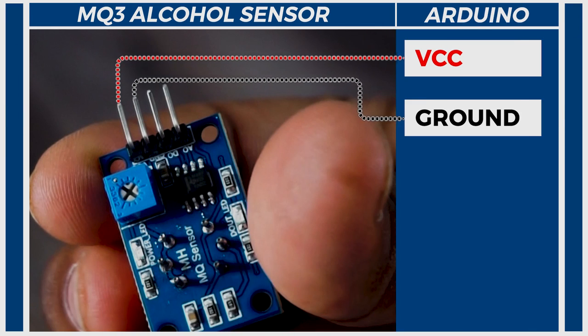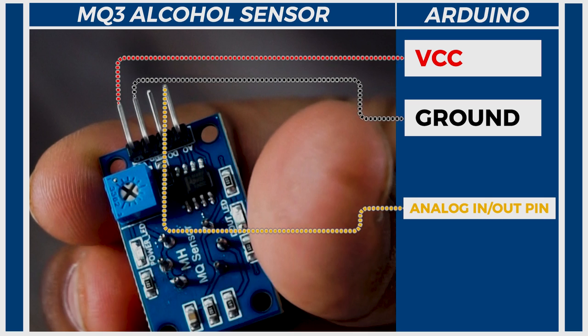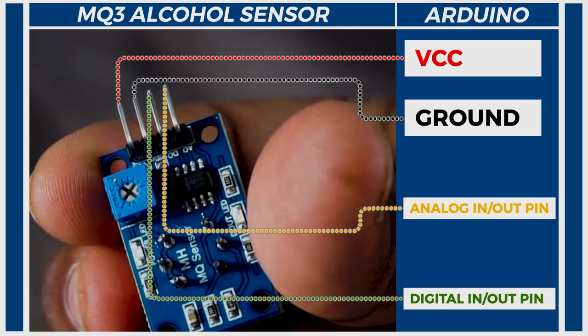VCC and GND can be connected to VCC and GND of Arduino respectively. A0 can be connected to any analog input output pins of Arduino and D0 can be connected to any digital input output pins of Arduino.